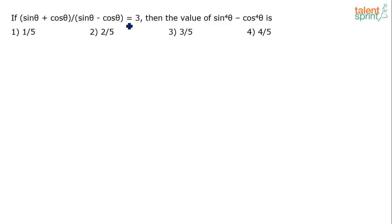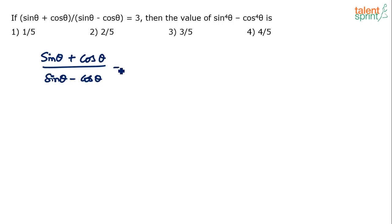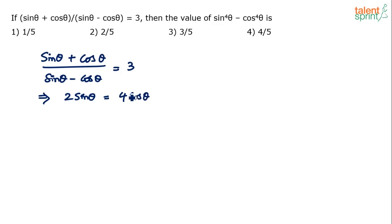Next problem: if (sinθ + cosθ)/(sinθ - cosθ) = 3, find sin⁴θ - cos⁴θ. Cross-multiplying: sinθ + cosθ = 3sinθ - 3cosθ. Rearranging: sinθ = 2cosθ, so sinθ/cosθ = tanθ = 2.